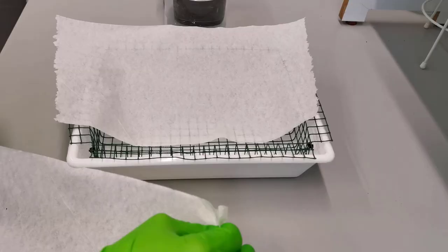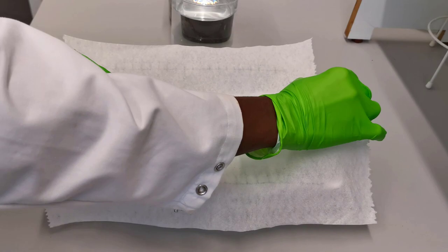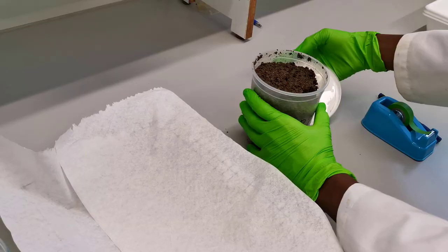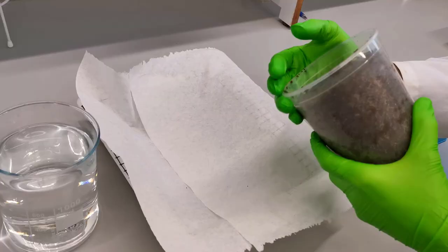To begin with the extraction process, place the tissue paper on the supporting wire mesh. Now spread out some soil on the tissue paper and make sure to break big lumps of soil. Depending on the aim of your experiment, you can also use a definite volume of soil.